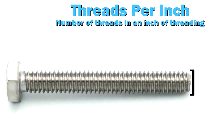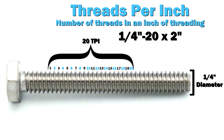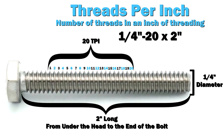So when you read a bolt that says quarter-twenty by two, that means quarter inch diameter, twenty TPI — that's threads per inch — and then two inches long. Two inches long would be from under the head to the end of the bolt. Whenever you have a full head like this, it's always measured from under the head to the end of the bolt. So that's your threads per inch.